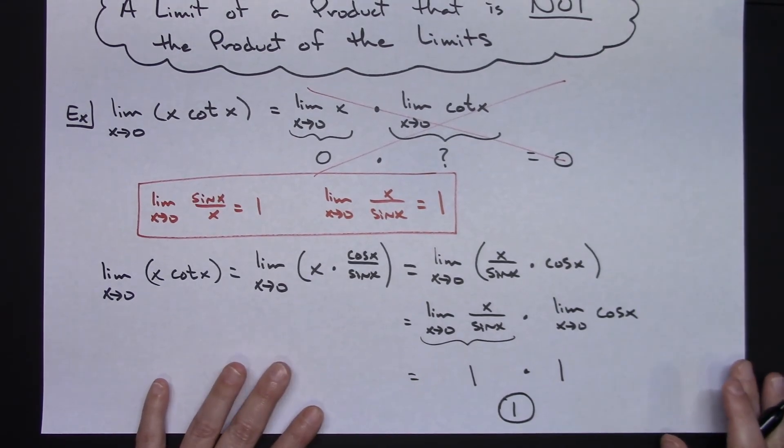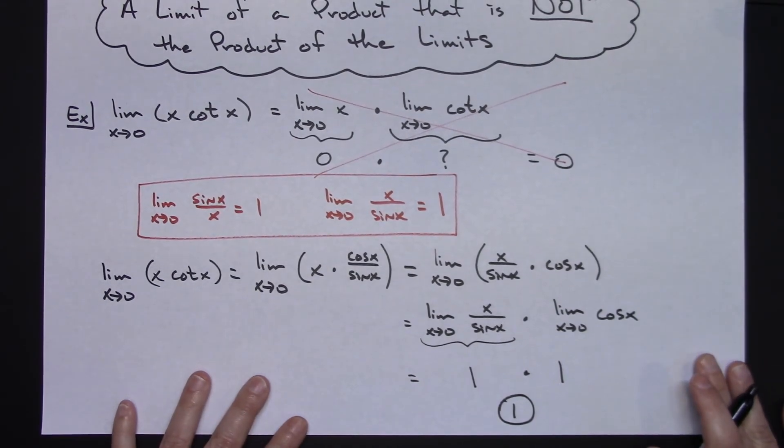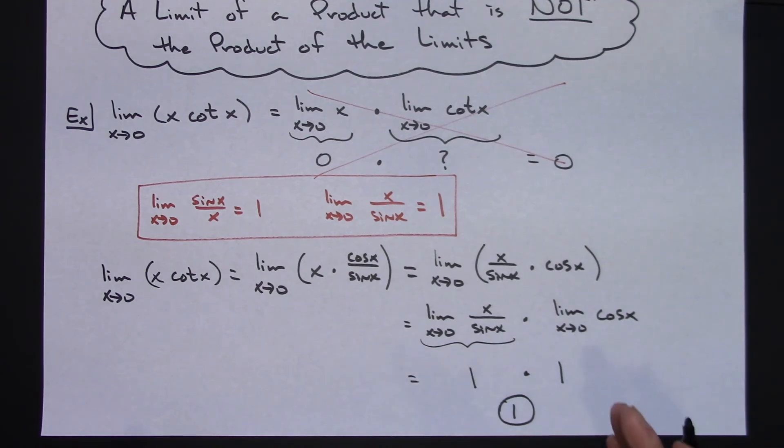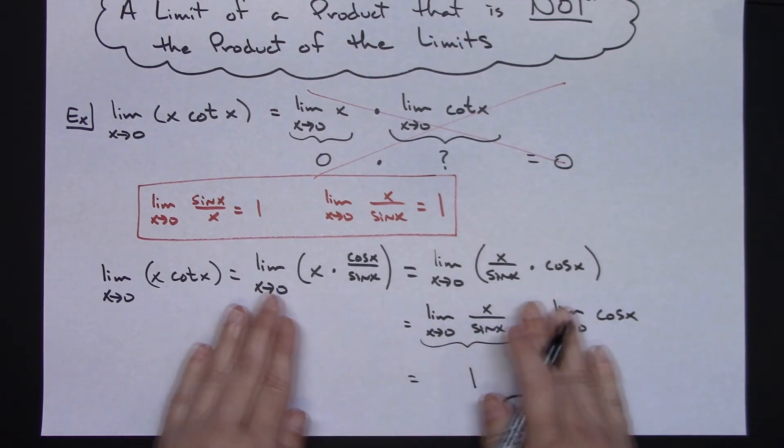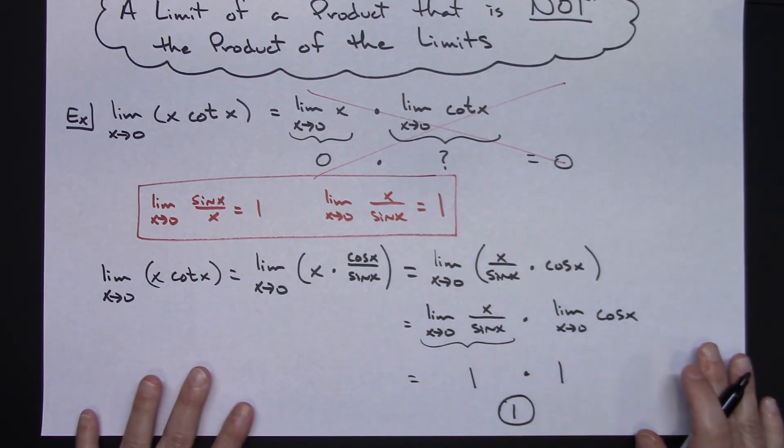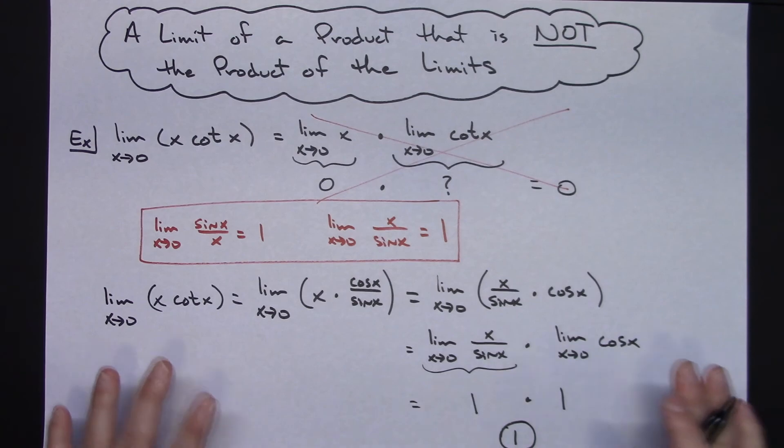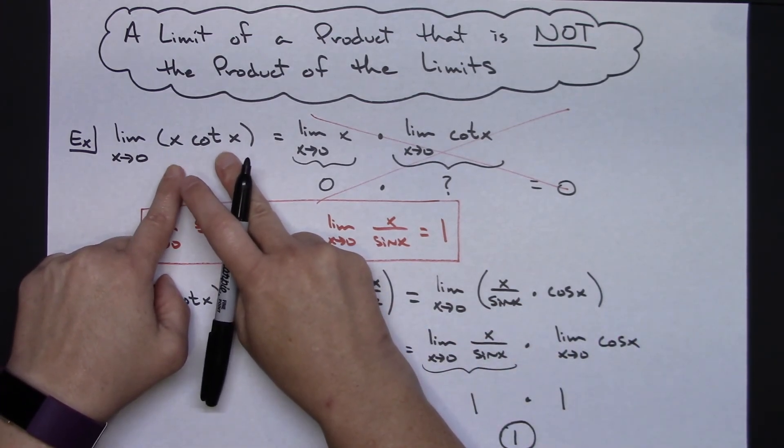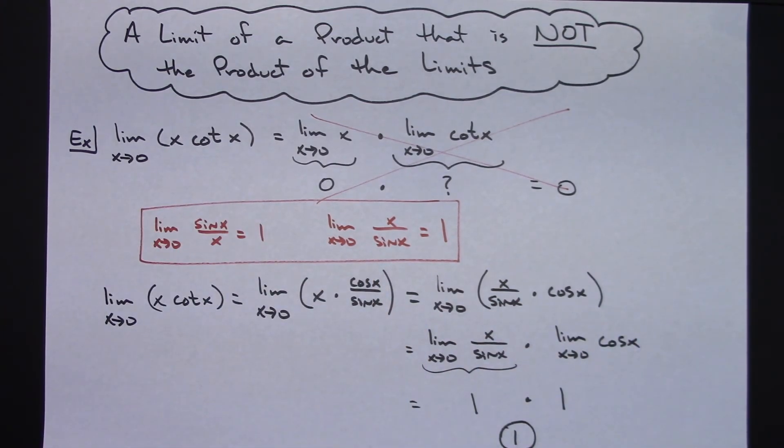So this was just kind of showing you that the limit of a product is not always the product of the limits. Yes, that property works. Works really nicely as we saw down here. But the condition is both of those limits must exist. So that's something that you've got to be careful for and you got to watch out for.